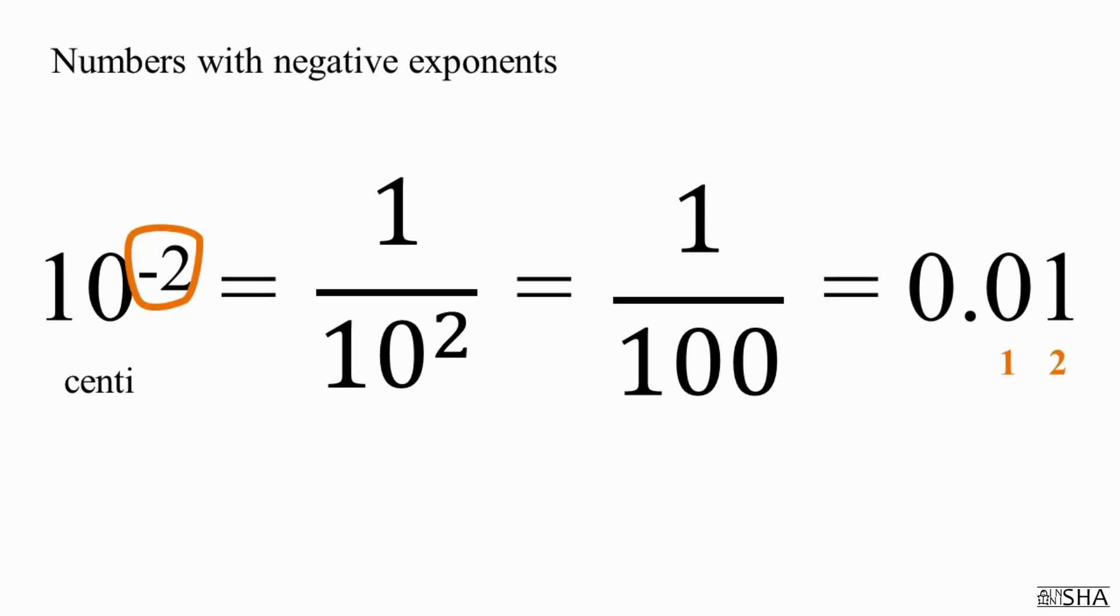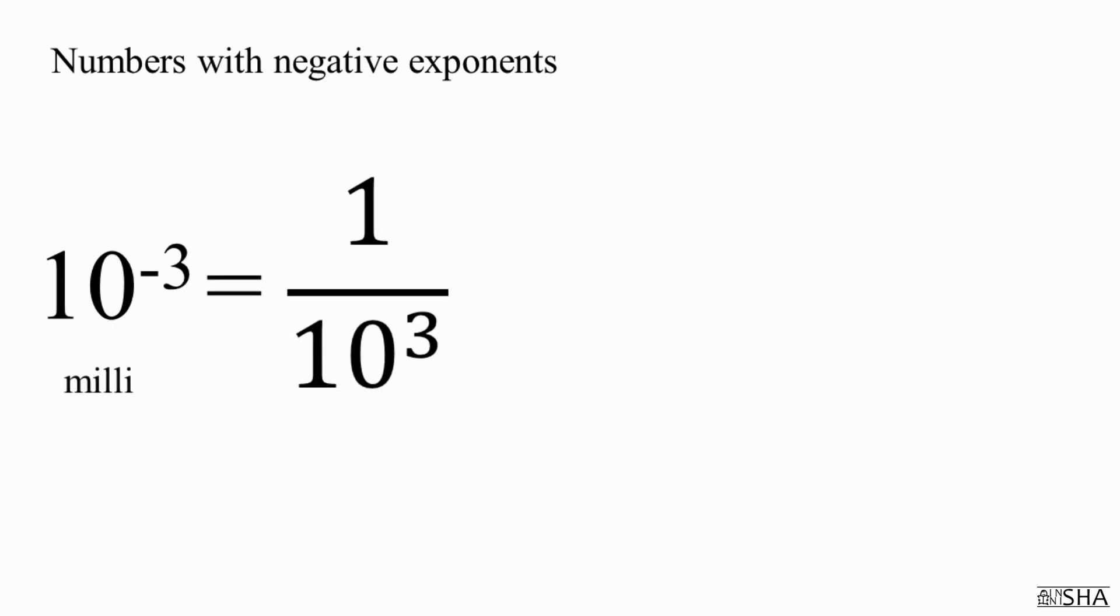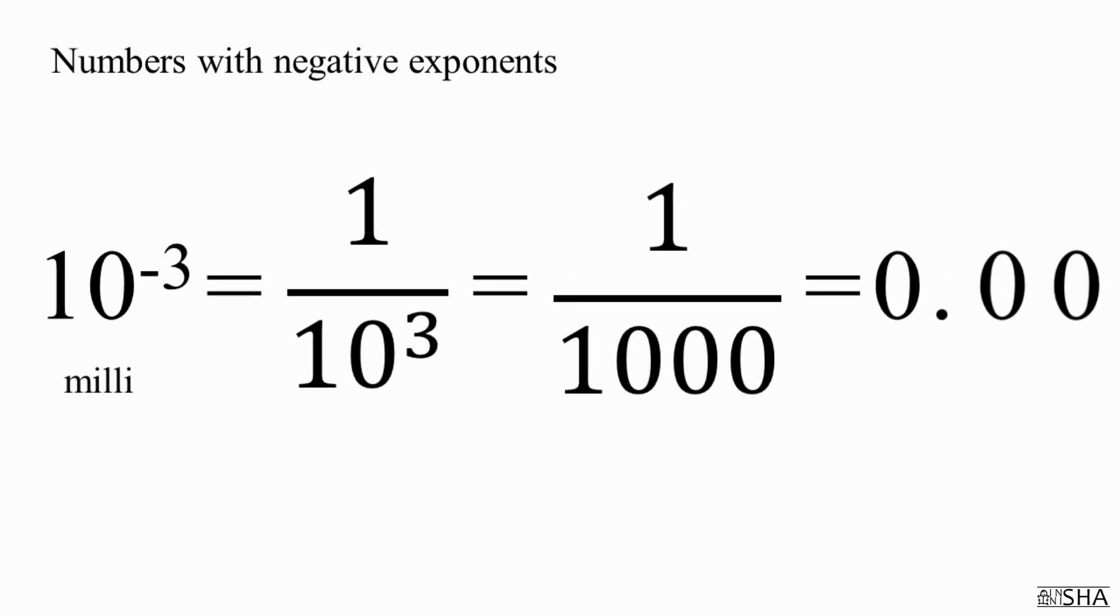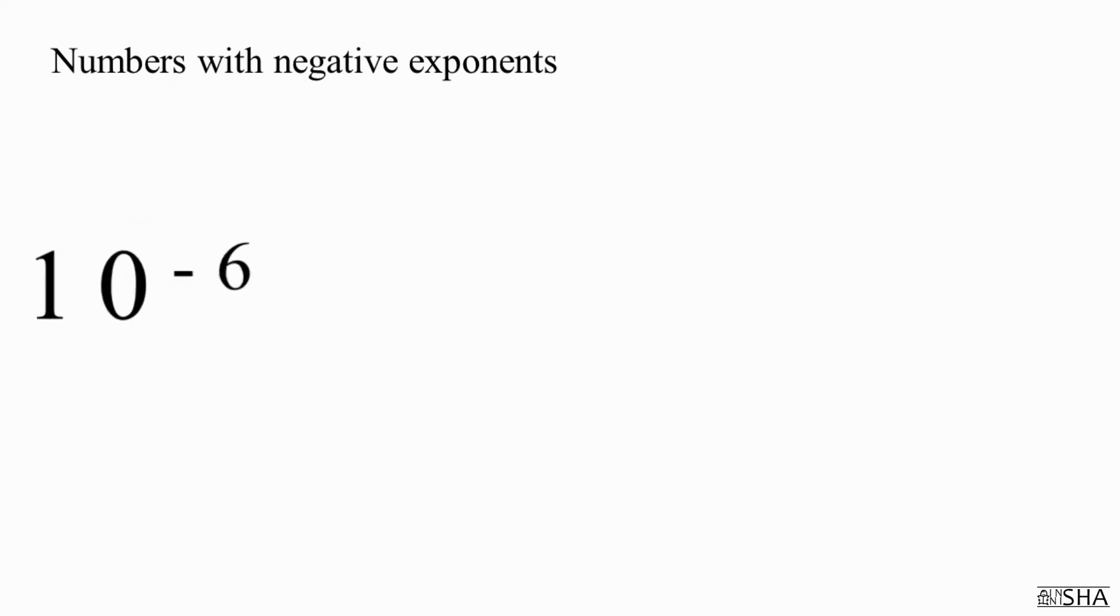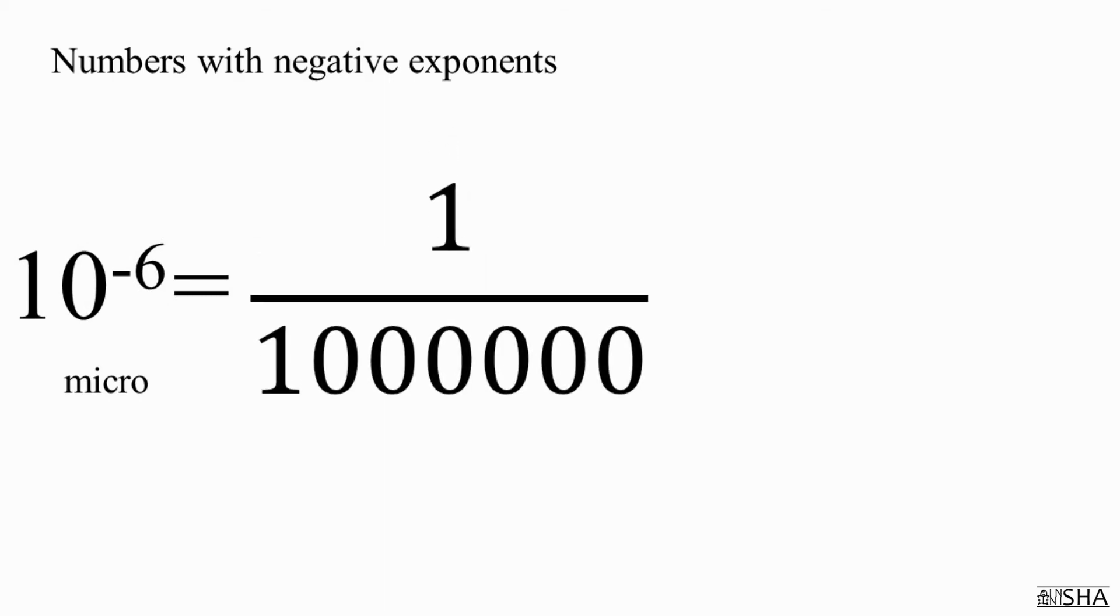For a base of ten, a negative exponent shows us how many digits there are after the point. The factor of the prefix milli is ten to the negative third power. This means that there are three digits after the decimal point, and this number is point zero zero one. The factor of the prefix micro is ten to the negative six power, which corresponds one millionth, which has six digits after the point.